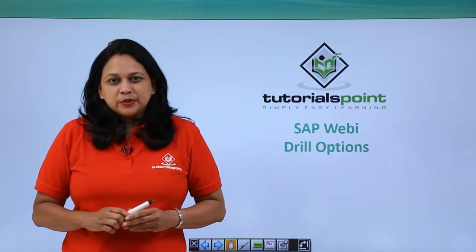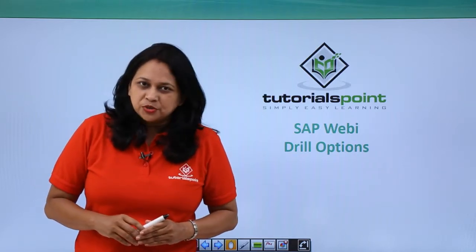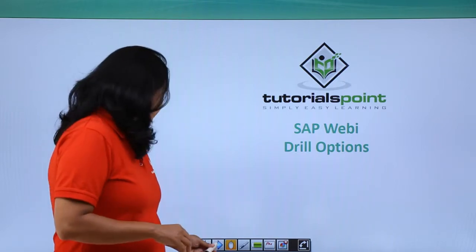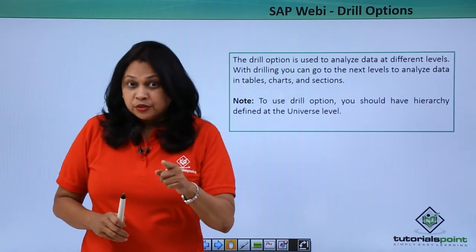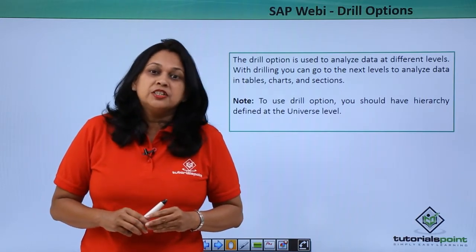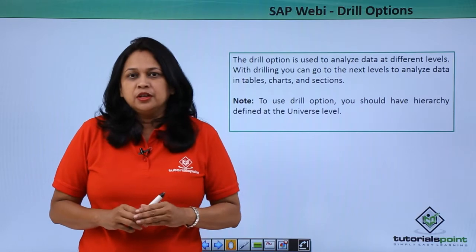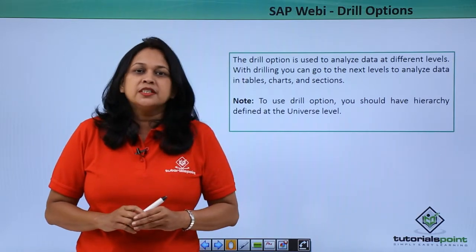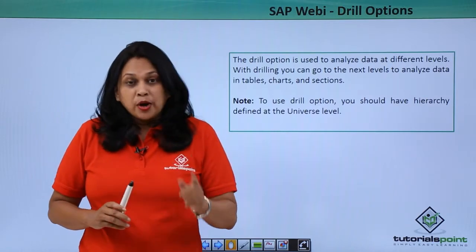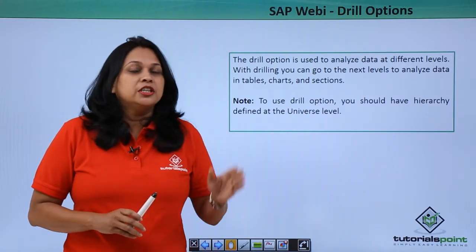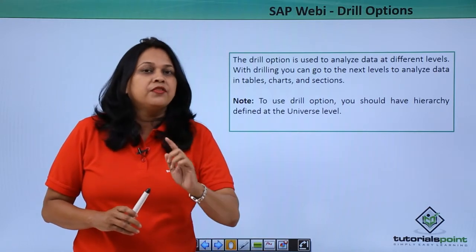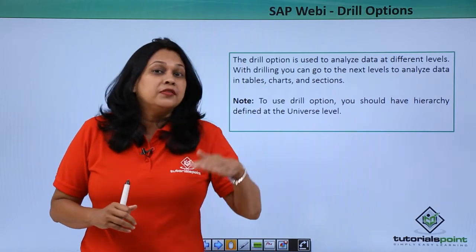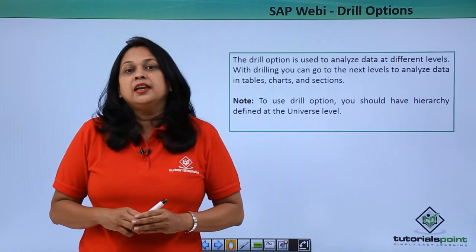In this video we will see how to use the drill option. You can analyze the data at different levels using the drilling option. However, to use the drill option you should have the hierarchy defined at the universe level. Once you have the hierarchy at the universe, you can add that object to result objects in the query panel. Once you run the query, the object will be added to the list of available objects in a WebEye document. Drilling allows you to move to a level up or level down as per the hierarchy in the universe.